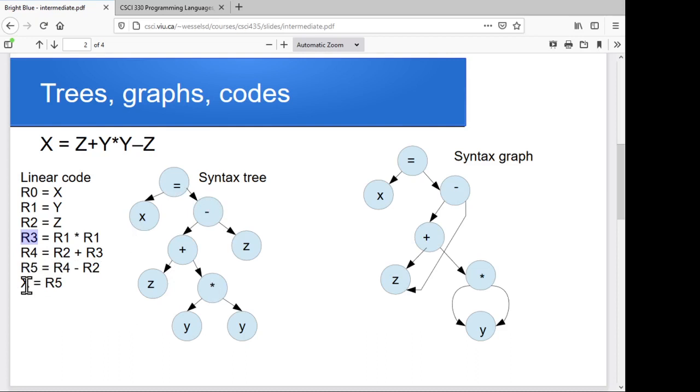The linear code approach is to take essentially a bottom-up evaluation of our syntax tree, and every place where we've got an internal node, we store the result in a temporary variable someplace so that we can use it as we work our way further up the tree. So we've got these three very different approaches to how we'll model a representation of whatever that original program was doing.